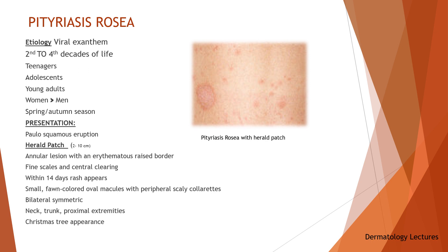Although most patients are asymptomatic except for the rash, 5% of patients complain of headaches, malaise, arthralgias, chills, nervousness, vomiting, diarrhea, or constipation before the appearance of the herald patch. Within 7 to 14 days, patients develop an eruption characterized by small salmon-colored oval macules which exhibit peripheral scaly collarettes similar to those on the herald patch. These lesions are generally bilateral, symmetric, and may be located anywhere on the body, especially on the neck, trunk, and proximal extremities. Because the lesions follow the skin cleavage lines, they have the characteristic appearance of a Christmas tree. There is no effective treatment for pityriasis rosea except that patients who experience severe pruritus may benefit from topical steroids and oral antihistamines.